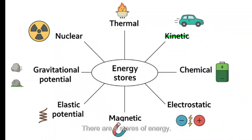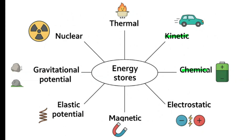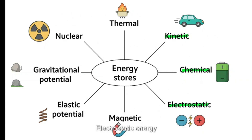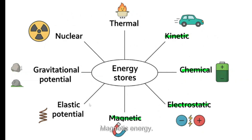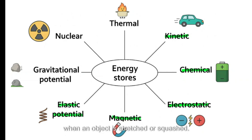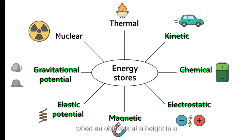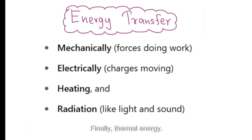There are eight stores of energy: kinetic energy, which is the energy of any moving object; chemical energy, energy stored in a battery or food; electrostatic energy, due to attractive and repulsive forces between charges; magnetic energy; elastic potential energy, when an object is stretched or squashed; gravitational potential energy, when an object is at a height in a gravitational field; and nuclear energy; and finally thermal energy.